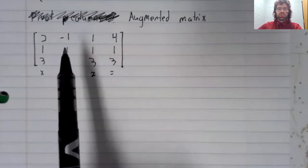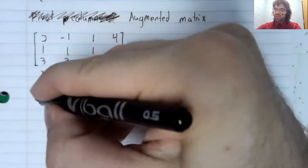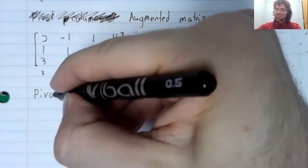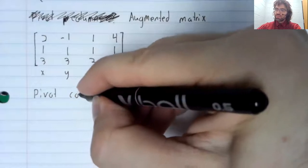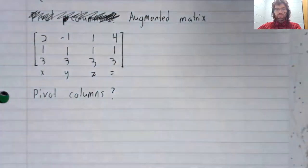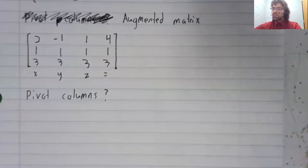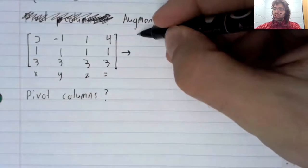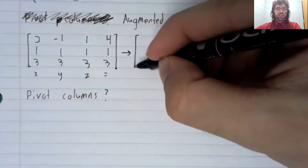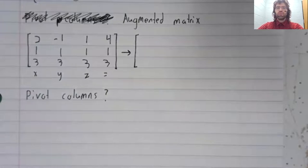Now this matrix will have pivot positions and pivot columns. Let's ask ourselves what the pivot columns are. To answer that question, we need to perform either Gaussian elimination or Gauss-Jordan elimination to put this into either row echelon form or reduced row echelon form.